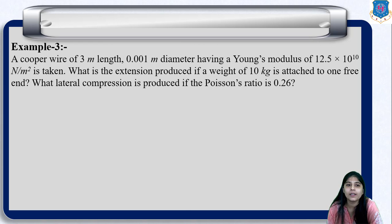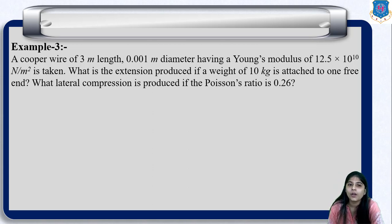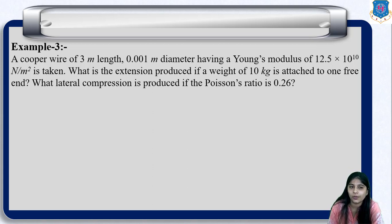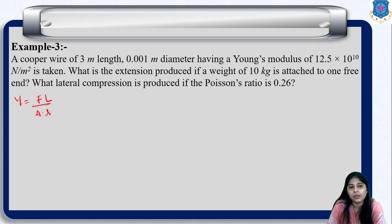Example 3: A copper wire of 3 meter length and 0.01 m diameter has a Young's modulus of 12.5×10¹⁰ N/m². What is the extension produced if a weight of 10 kg is attached to one free end? What lateral compression is produced if the Poisson's ratio is 0.26? We use the relation: extension δL = F×L / (A×Y).